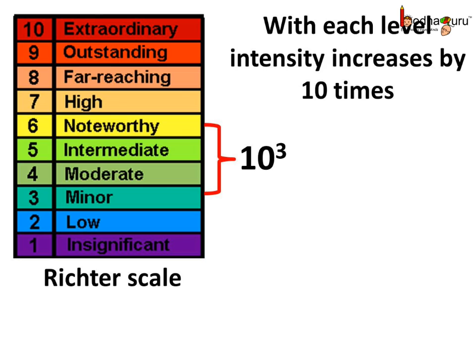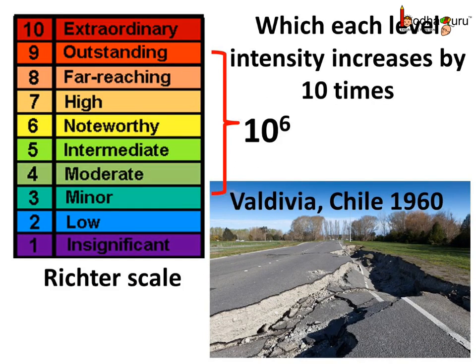A 6 magnitude earthquake is therefore 10 multiplied by 10 multiplied by 10, or 10 to the power 3 times stronger than the 3 magnitude earthquake. The earthquake in Valdivia, Chile in May 1960 was the strongest ever, over 9 magnitude — that is, more than 10 to the power 6 times stronger than a minor earthquake. And hence it caused huge destruction.